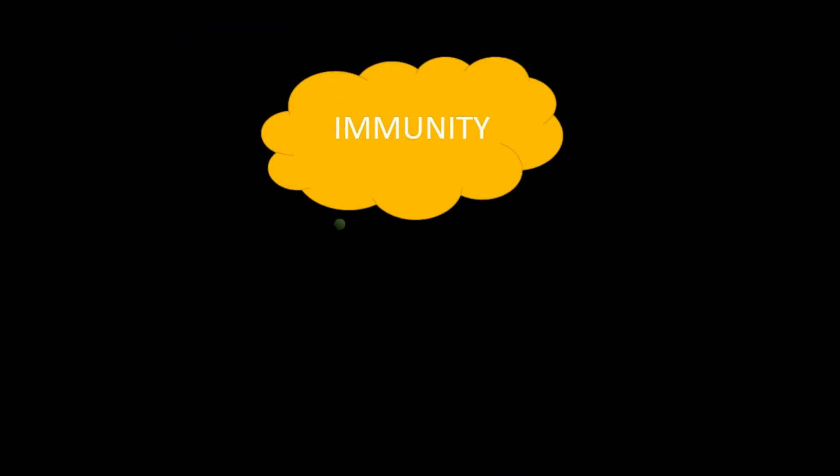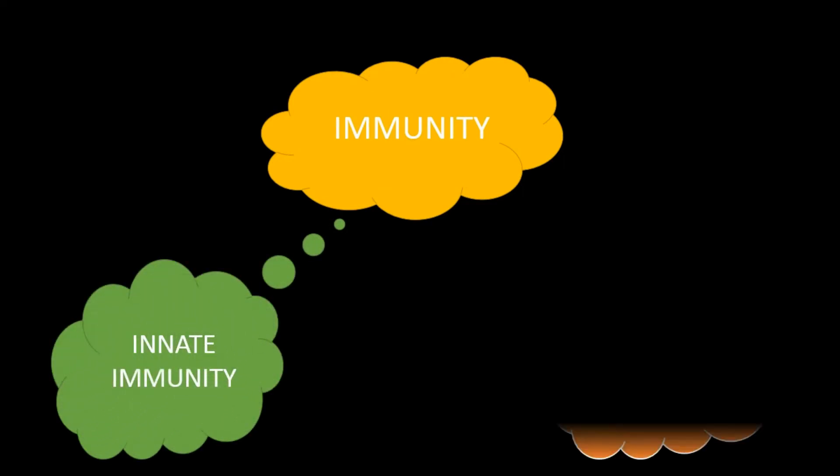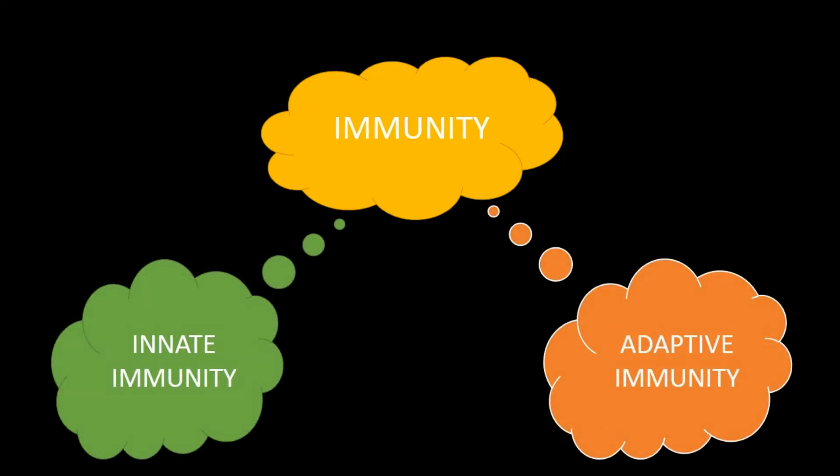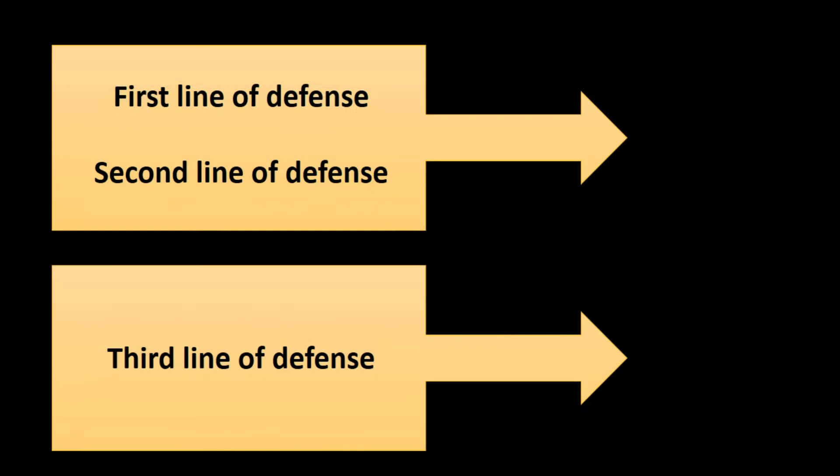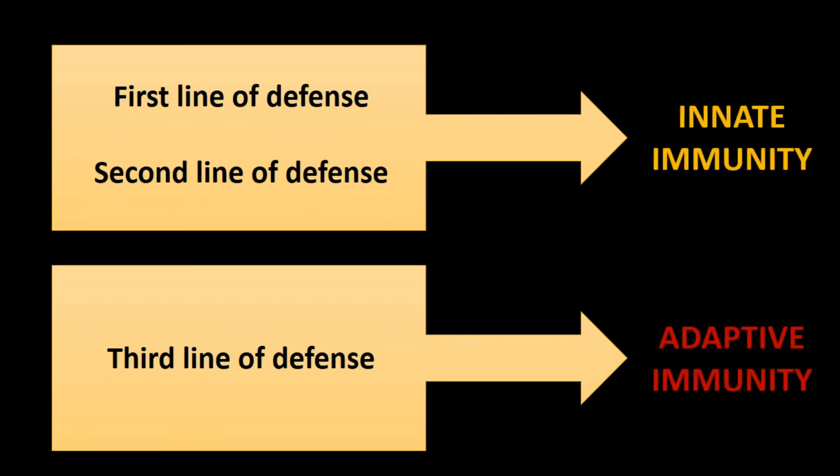There are two types of immunity: innate immunity and adaptive immunity. The two types depend on each other to perform the immune response. Innate immunity is non-specific with immediate immune response. Adaptive immunity is specific with delayed immune response. There are three lines of defense.